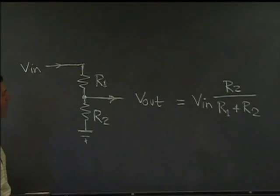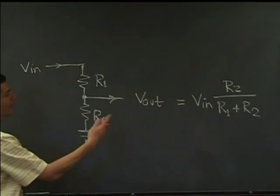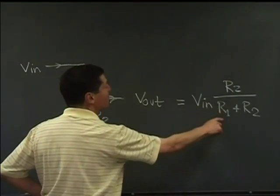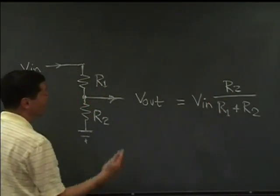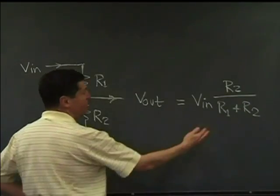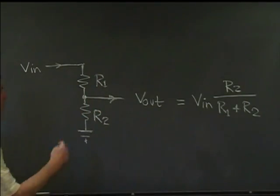As we've seen, a resistive voltage divider always gives you an output voltage that's less than or at most equal to the input voltage, simply because the lower resistor can never be larger than the sum of the lower and upper resistor.